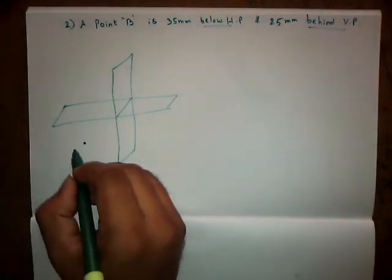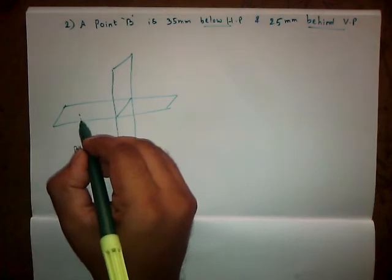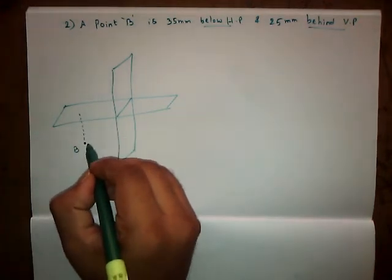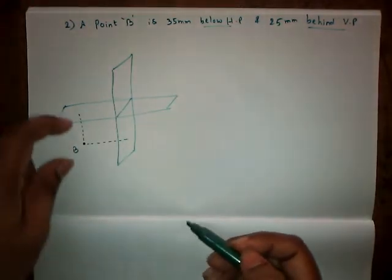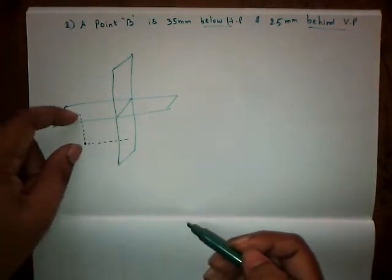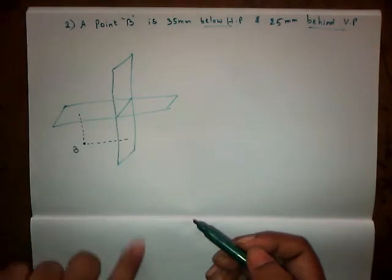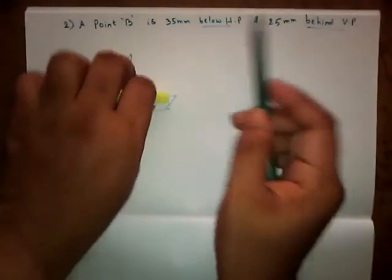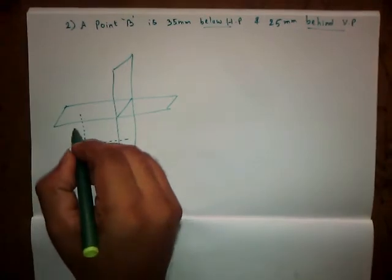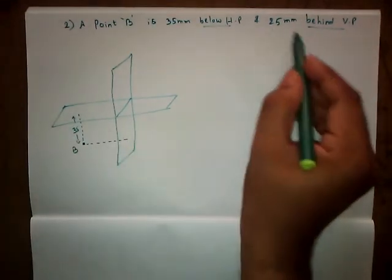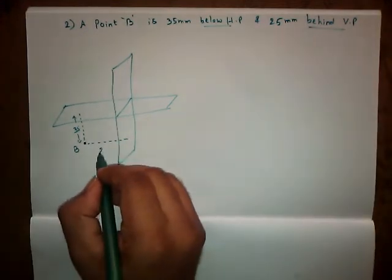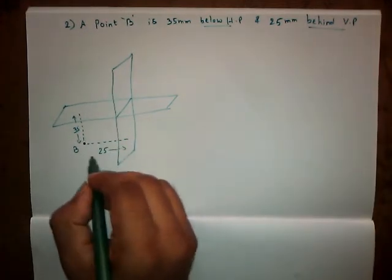The name of the point is capital B. Immediately draw dotted lines from the plane to the point. This distance is coming from HP, so this is HP distance, and this distance is coming from VP. So VP distance, according to the question we have 35 mm below HP, so this is 35 mm, and we have 25 mm behind VP, so this distance is going to be 25 mm.